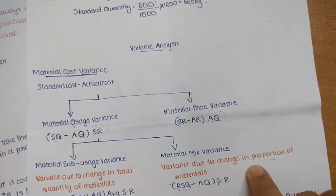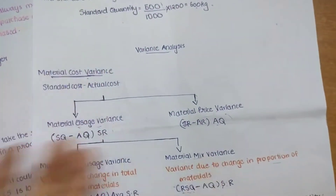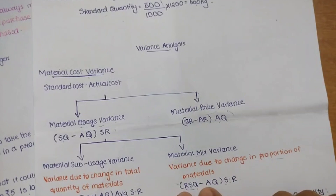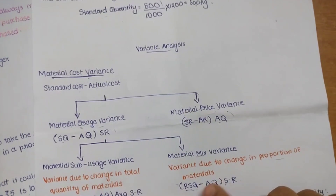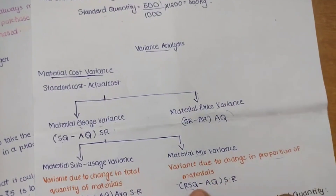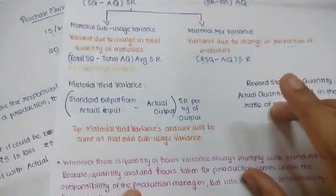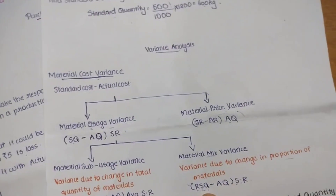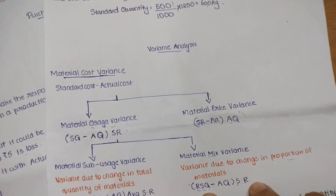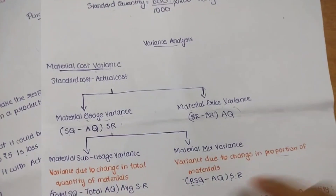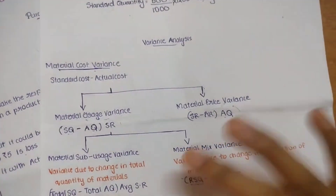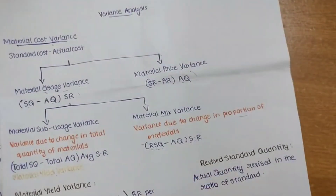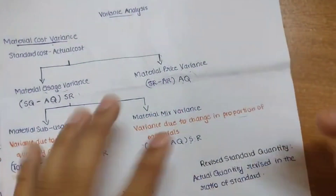The yield variance due to change in proportion of materials is the material mix variance. For material mix variance, we do the revised standard quantity — that is, the standard ratio of actual quantity. We multiply by the standard rate.